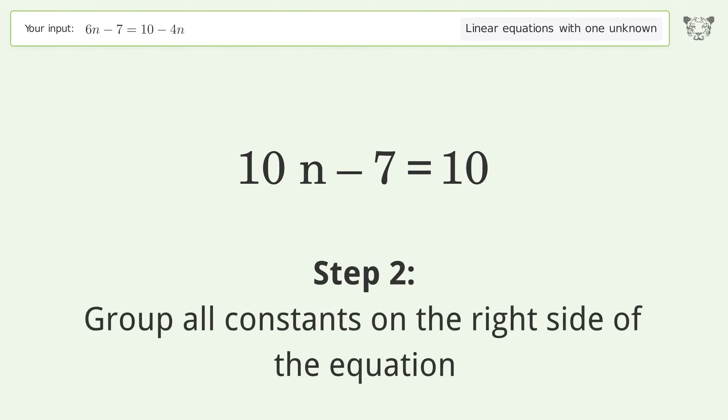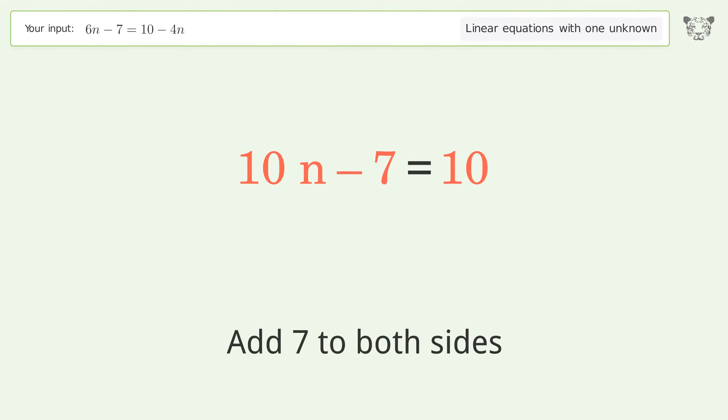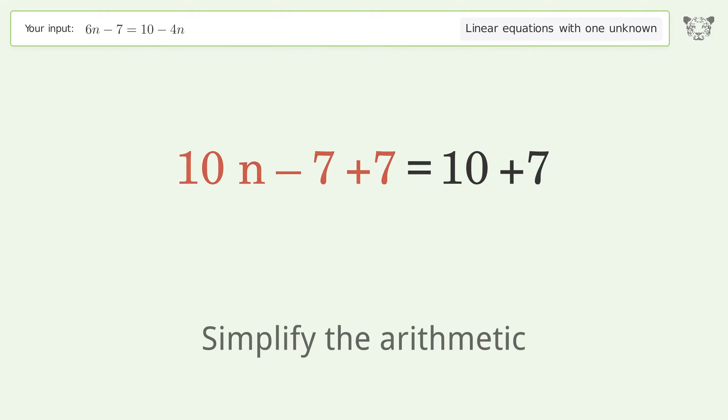Group all constants on the right side of the equation. Add 7 to both sides. Simplify the arithmetic.